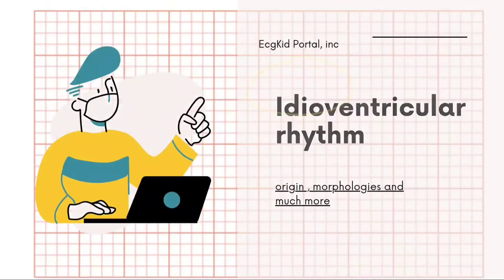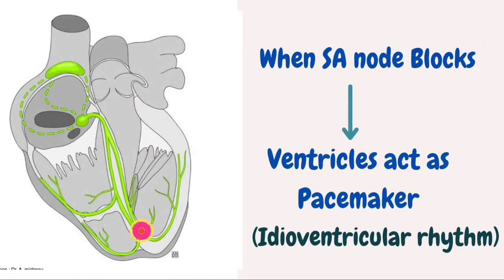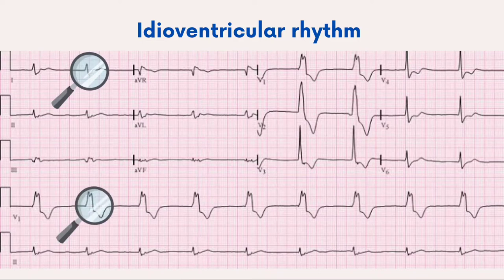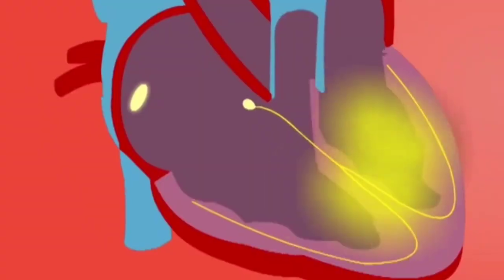Idioventricular rhythm is very similar to ventricular tachycardia except the rate is less than 60 beats per minute. This is often seen in cases of high-degree AV block, in which the ventricle serves as the dominant pacemaker. ECG criteria for diagnosis include: absent P wave, widened QRS complex, and discordant ST segment.